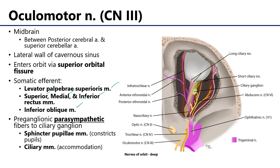The oculomotor nerve also has a parasympathetic component to it. There are fibers of the oculomotor nerve that are preganglionic parasympathetic. These are going to ultimately synapse in the ciliary ganglion, which can be found sort of in veromedial along the optic nerve. The postsynaptic parasympathetic fibers are going to serve two sets of muscles — first, the sphincter pupillae muscles, which constrict the pupils during a parasympathetic response.